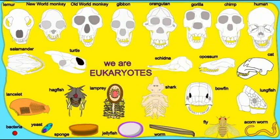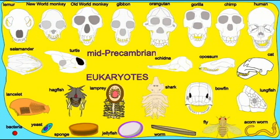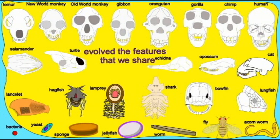We are eukaryotes, descended from the first eukaryotes, and it became very important to all the features that we share.